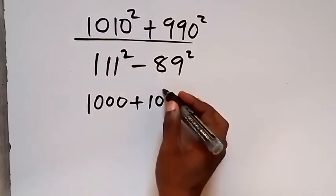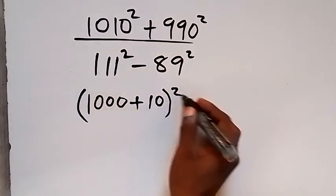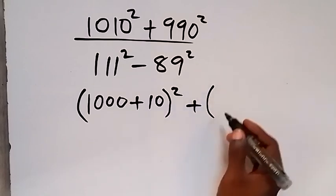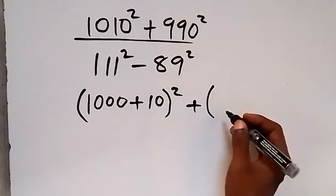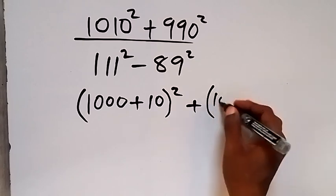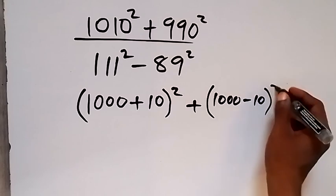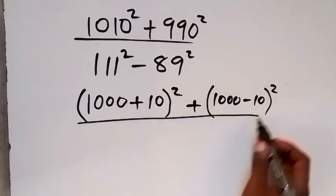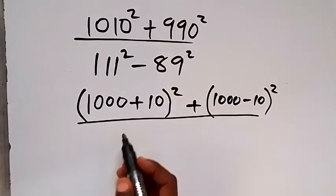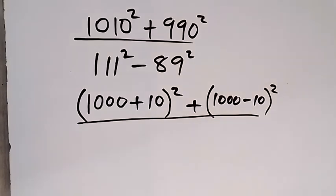And write it as 1010 squared, then plus also here this is 990 and we can write it as 1000 minus 10, then squared.